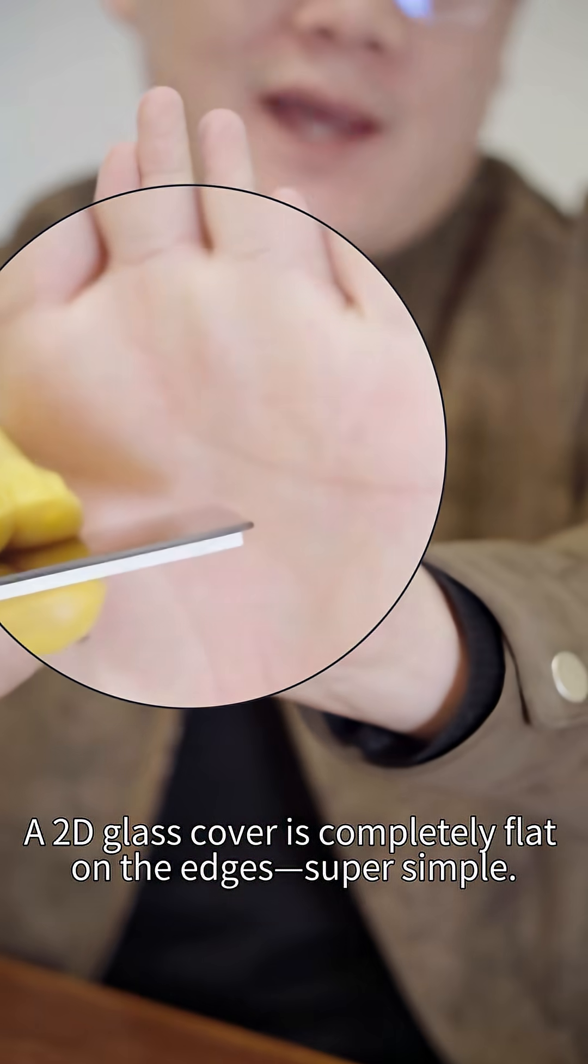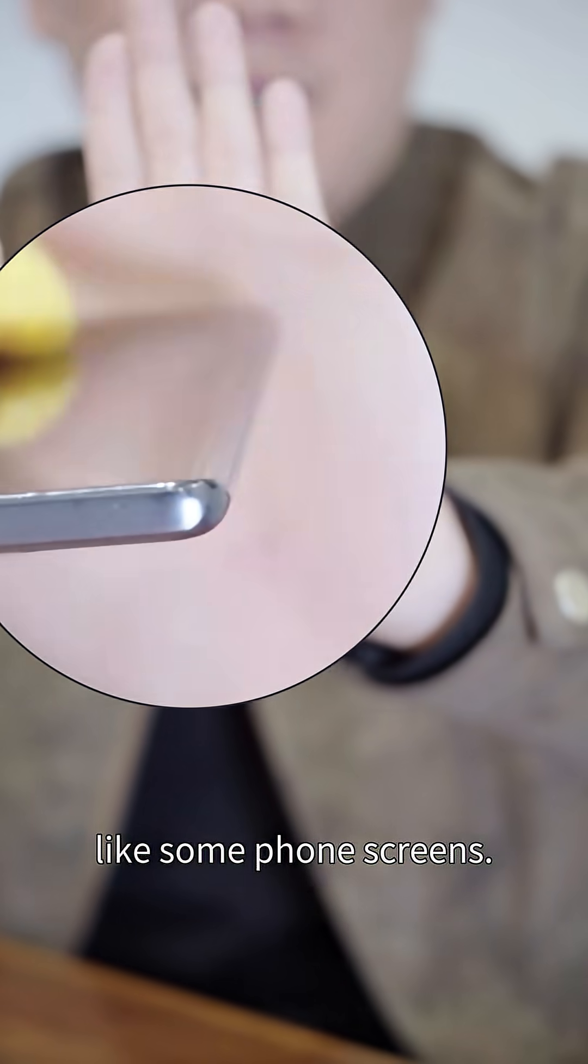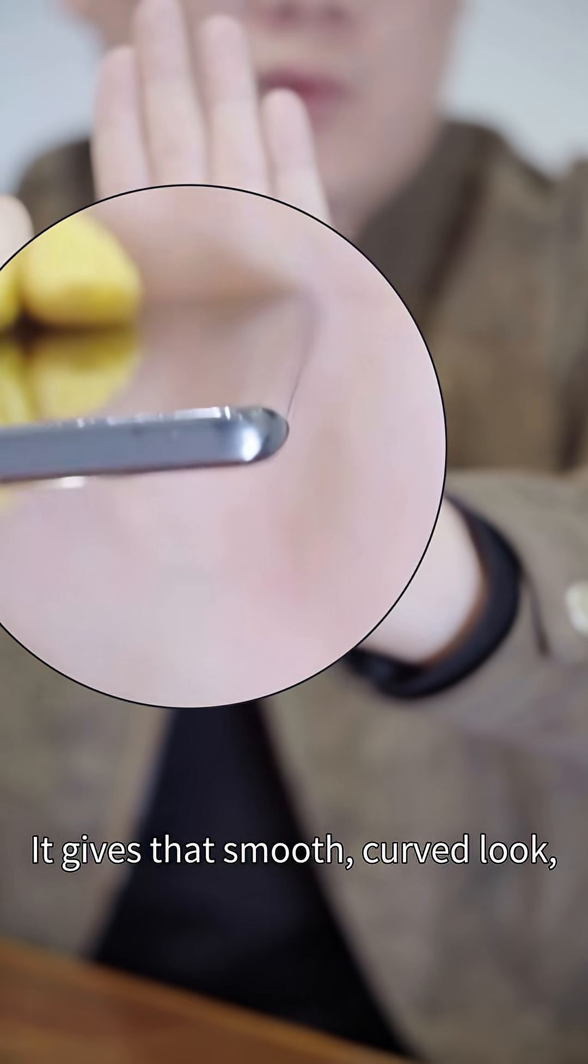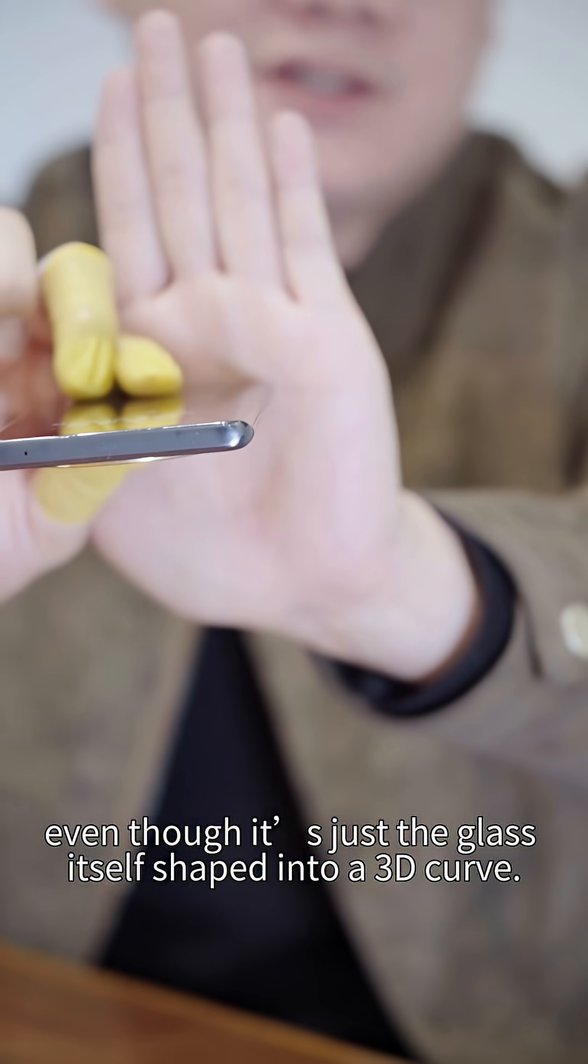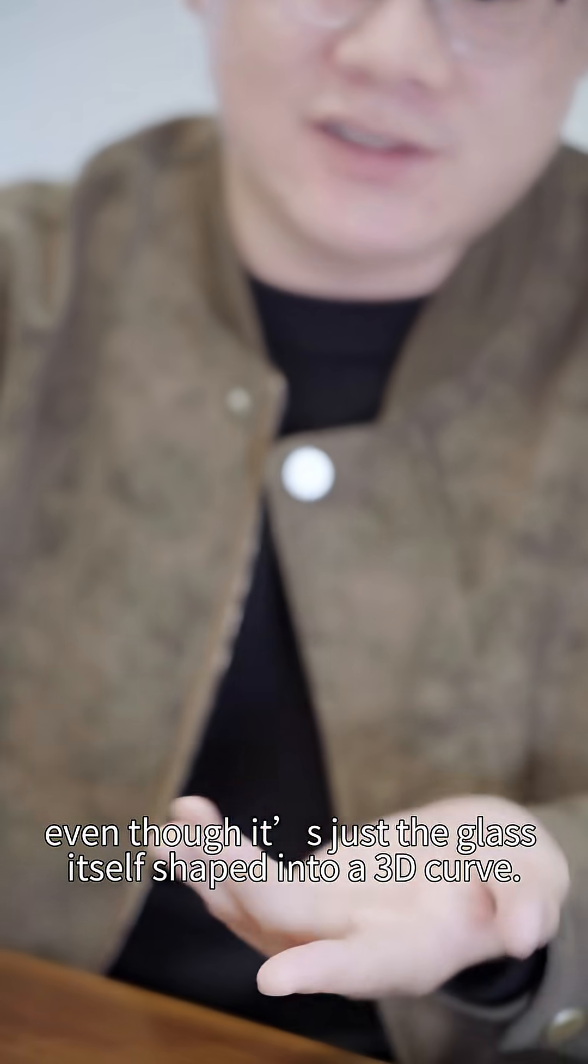A 2D glass cover is completely flat on the edges. Super simple. A 3D cover, on the other hand, has curved edges, like some phone screens. It gives that smooth curved look, even though it's just the glass itself shaped into a 3D curve.